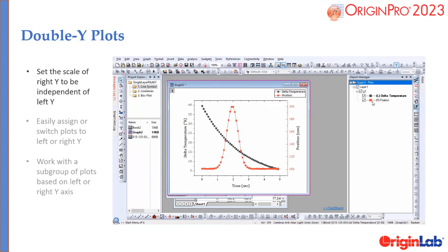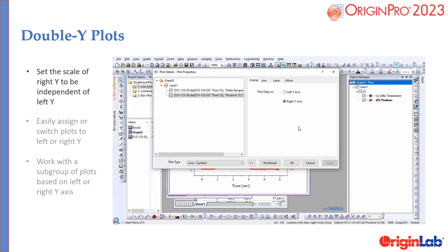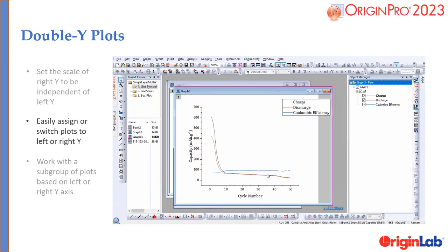The object manager now indicates which axis the data is plotted to. Easily assign or switch plots to left or right Y.